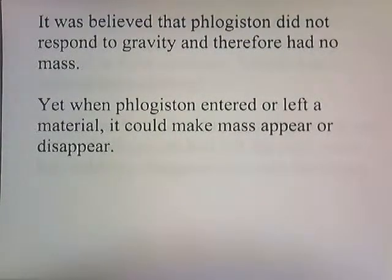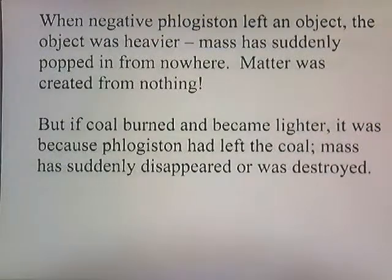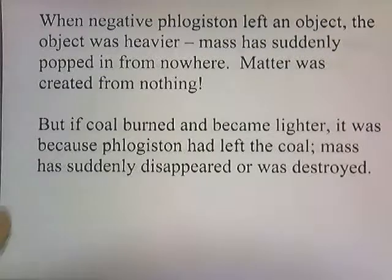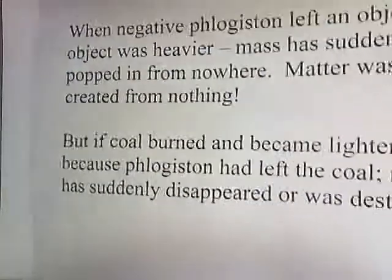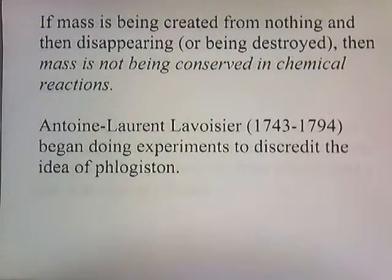It was believed that phlogiston did not respond to gravity and therefore had no mass, so the flames have no mass. Yet when phlogiston entered or left a material, it could make mass appear or disappear. When negative phlogiston left an object, the object was heavier — mass had suddenly popped in from nowhere; matter was created from nothing. But if a lump of coal burned and became lighter, it was because phlogiston had left the coal — mass had suddenly disappeared or was being destroyed. If mass is being created from nothing and then disappearing, then mass is not being conserved in a chemical reaction.